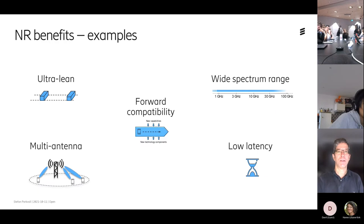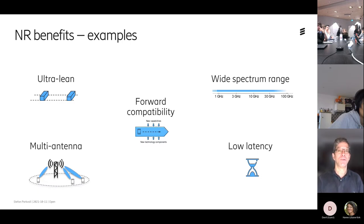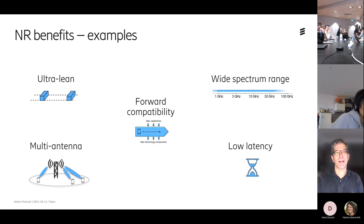Unlike 4G, in 5G multi-antenna support extends to initial access and cell search — not just connected-mode transmissions. Low latency was also a big focus: how to reduce ping time to the server and back. In the middle sits forward compatibility — designing a system that's easy to extend with new technologies, channels, or waveforms in the future.